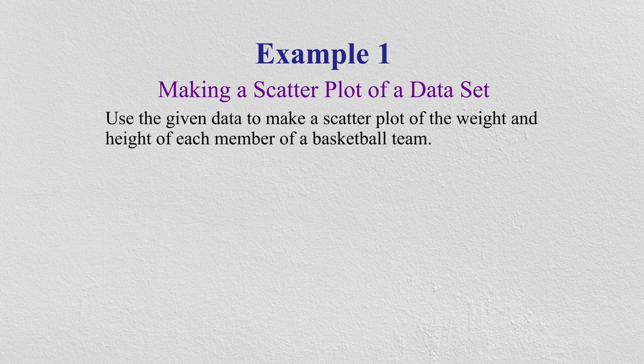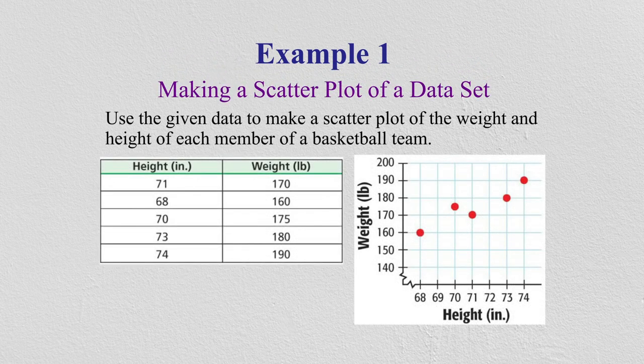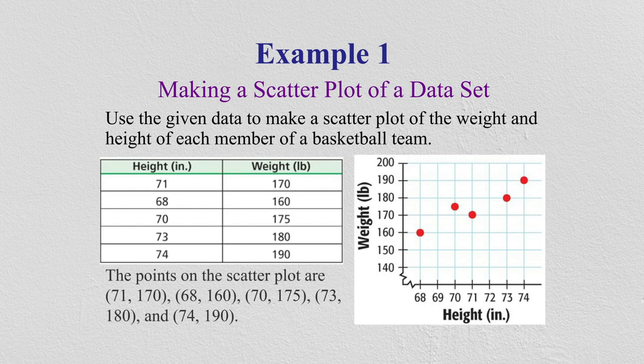Let's take an example using height in inches and weight in pounds. The heights are 71, 68, 70, 73, 74 and the weights are 170, 160, 175, 180, 190. The given data is to make a scatter plot for the weight and height of each member of a basketball team.